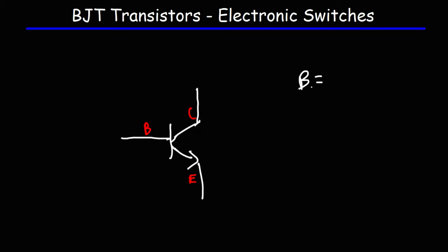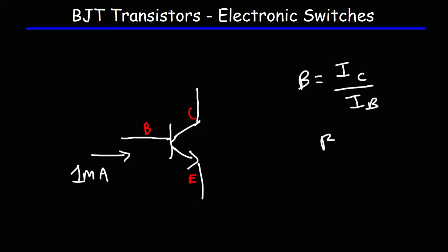Beta describes the ratio between the collector current and the base current. So if we send a small current of, let's say, 1 milliamp to the base of the NPN transistor — by the way, this is the flow of conventional current; electron flow is in the other direction — and let's say that beta is 100, then the collector current will be 100 times greater than the base current. And this is how the transistor acts as a switch.